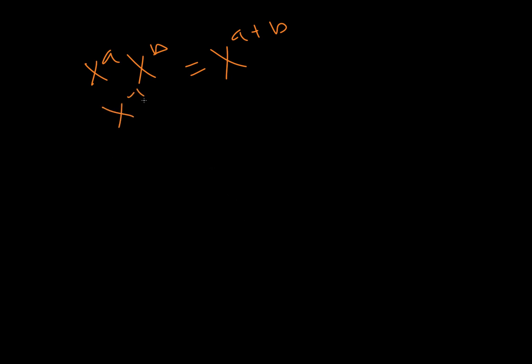And then a similar rule, if we do division, so x to the a divided by x to the b, then we subtract the exponents. So it's top exponent minus bottom exponent.